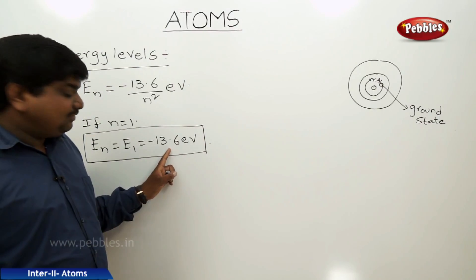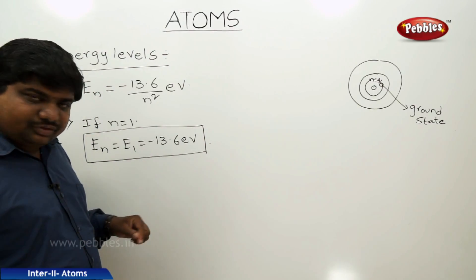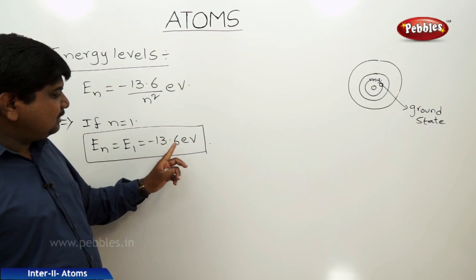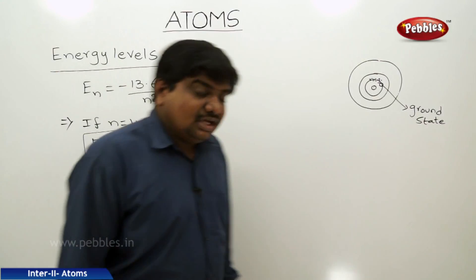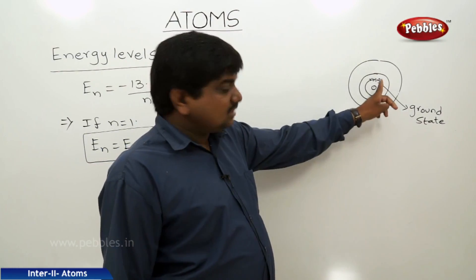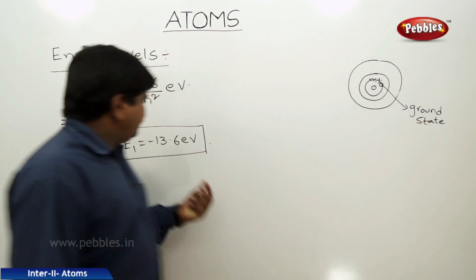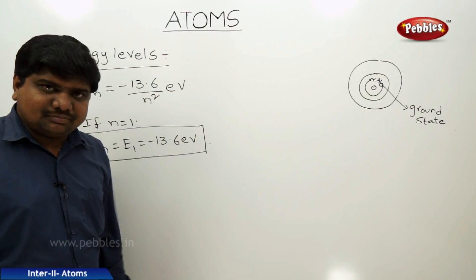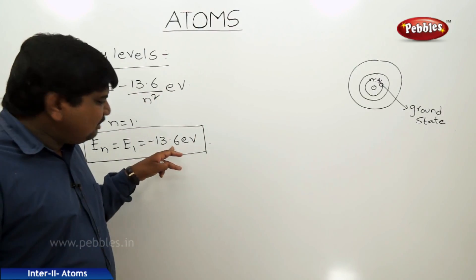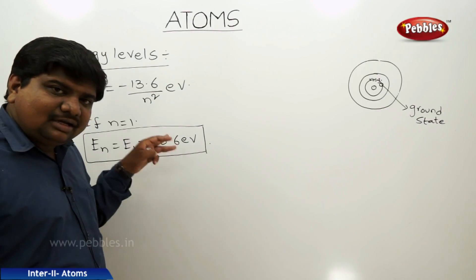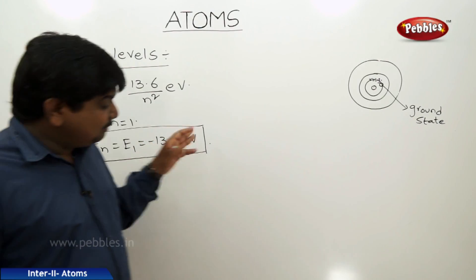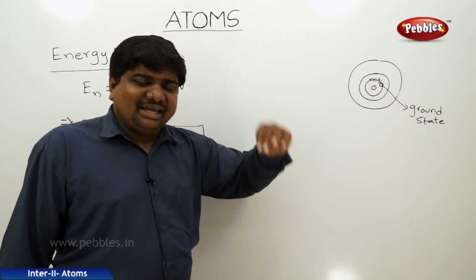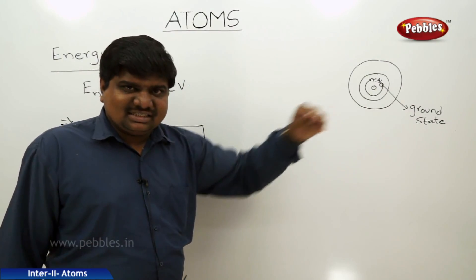What is the physical significance of this value? The energy of the ground state level is minus 13.6 eV. Suppose if you want to remove an electron from its ground state, you should apply this much energy, then only the electron will be removed. The minimum energy required to remove an electron from its ground state is called ionization potential or ionization energy.